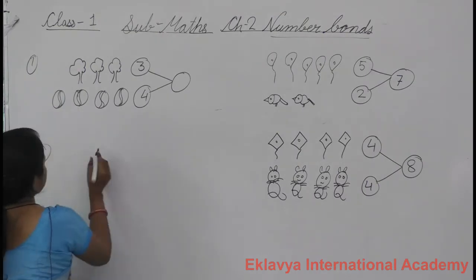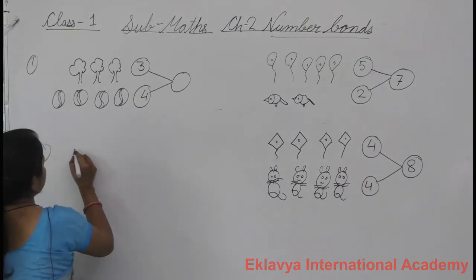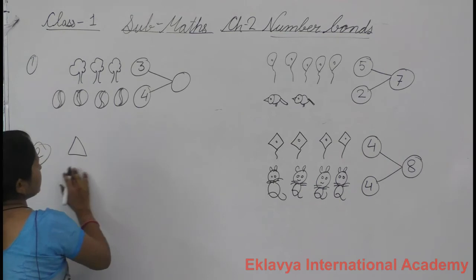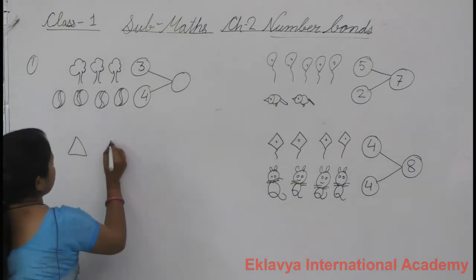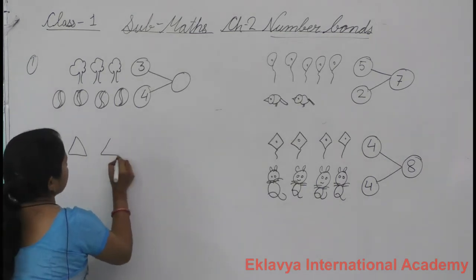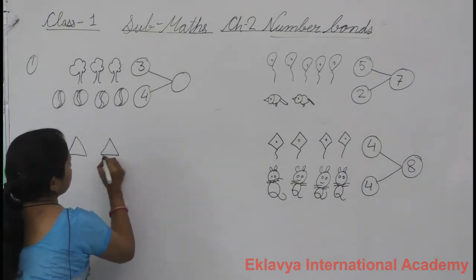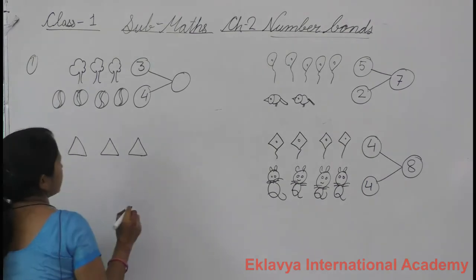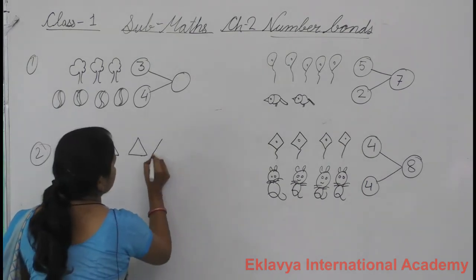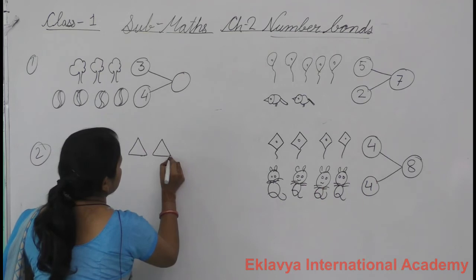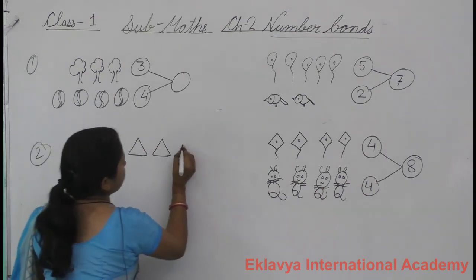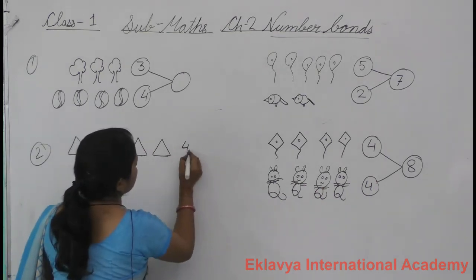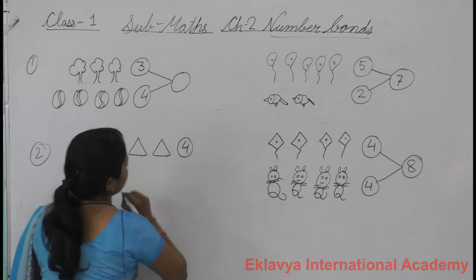Second is — which shape? Triangles. Good. How many triangles are there? One, two, three, four. Four.